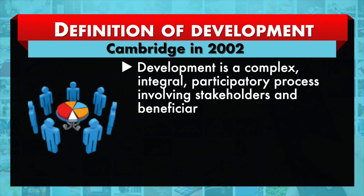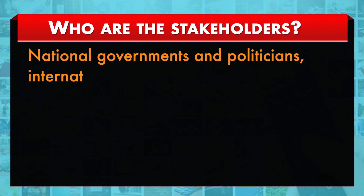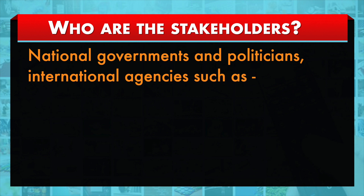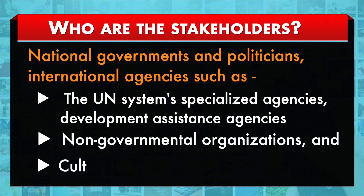Let's have a look at another definition of development in the 21st century, given by Cambries in 2002. Development is a complex, integral, participatory process involving stakeholders and beneficiaries, which aims at improving the overall quality of human life through improvements in a range of social sectors in an environmentally responsible manner. In this definition, stakeholders include national governments and politicians, international agencies such as the UN system's specialized agencies, developmental assistance agencies, the private sector, non-government organizations and cultural leaders.